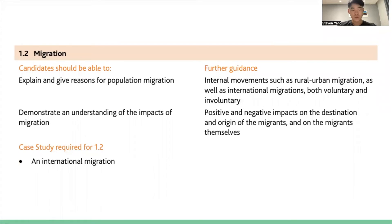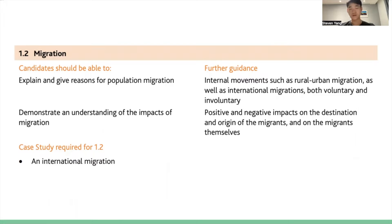This is the syllabus information. Cambridge International suggests that candidates should be able to explain and give reasons for population migration, demonstrate an understanding of the impact of migration, and I'll also delve into the aspects of internal movements such as rural-urban migration, as well as international migrations, both voluntary and involuntary, and the positive and negative impacts on the destination and the origin of migrants and on the migrants themselves. You also need to know a case study about an international migration.